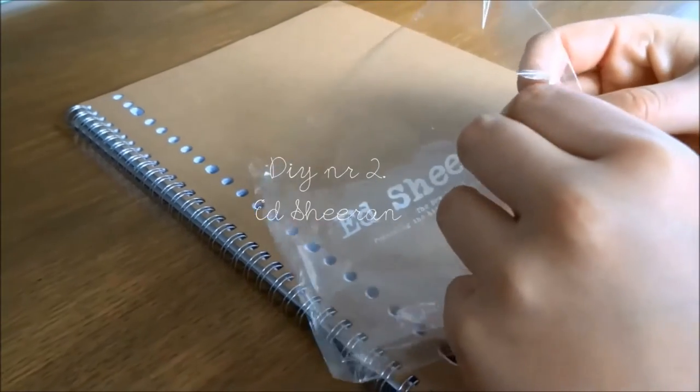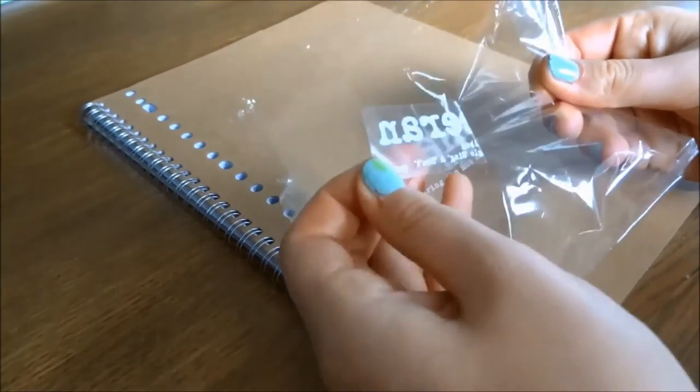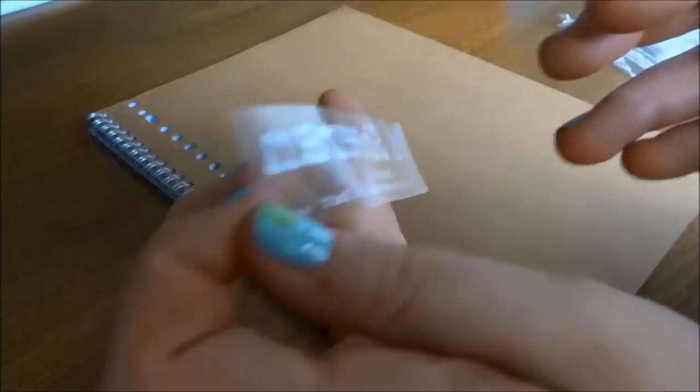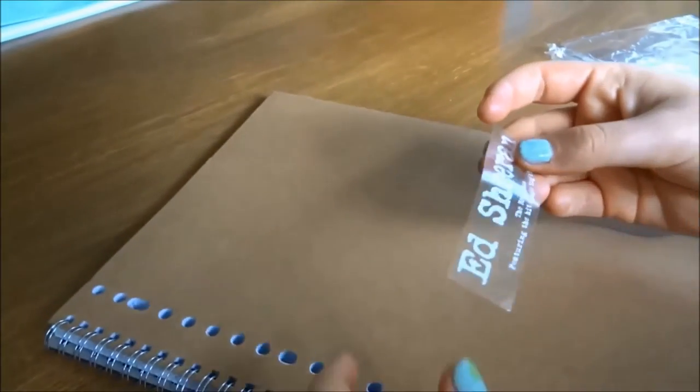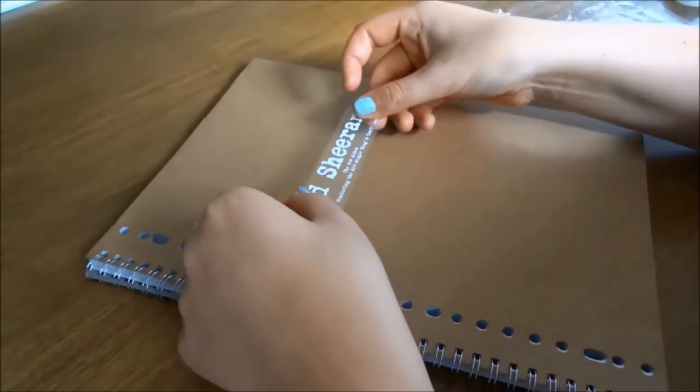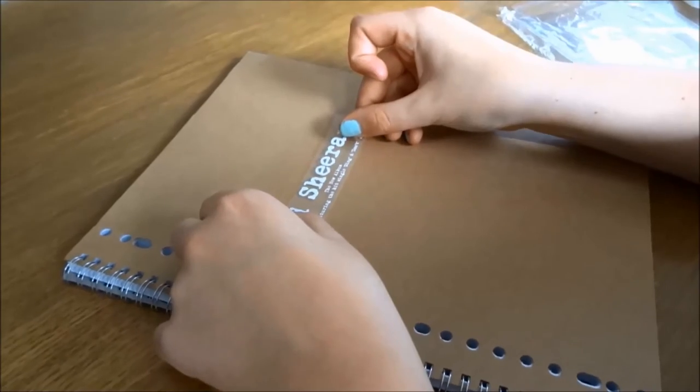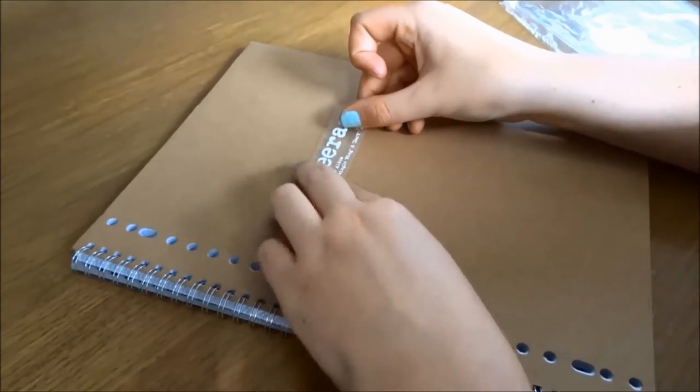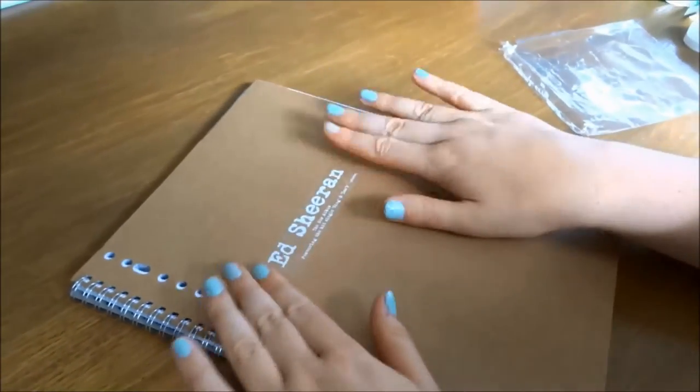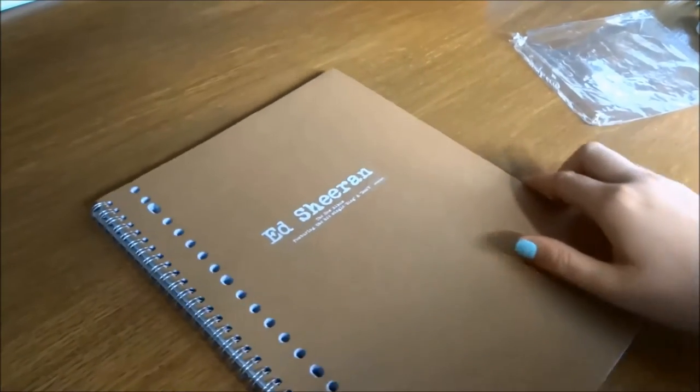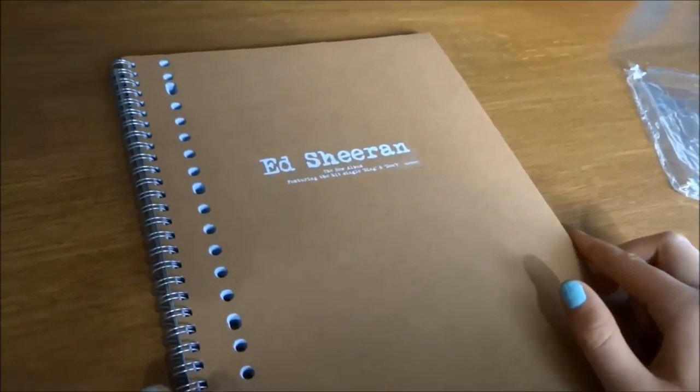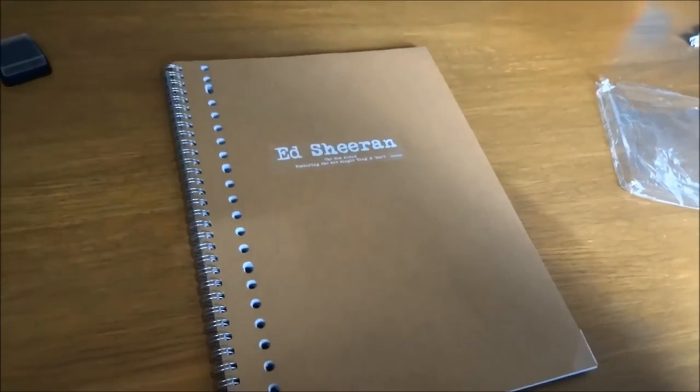The next DIY is an Ashton inspired one. The only thing you need for this are a notebook and some stickers. I got this Ashton one from his album Acts so I decided to use that one, but you can use anything you like. And this is what it looks like. It's really simple but also really nice.